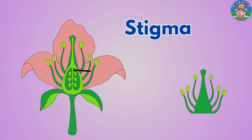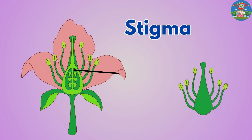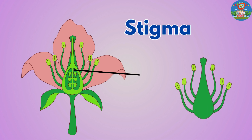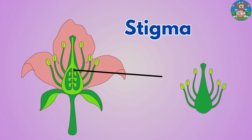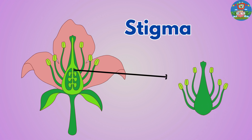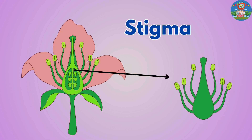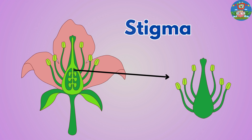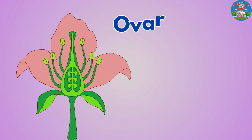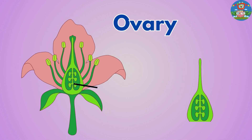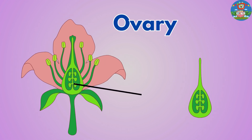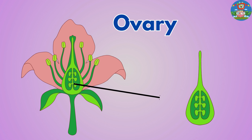The stigma is like a sticky landing pad on top of a flower where pollen lands to start the process of making seeds. Ovary. The ovary is the swollen base of the pistil where ovules develop into seeds after fertilization.